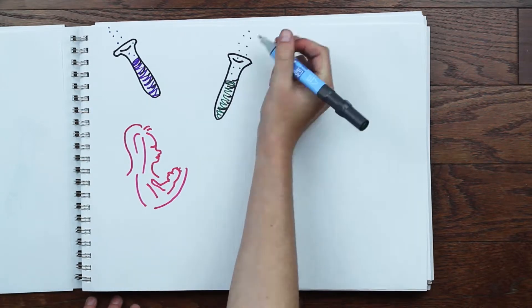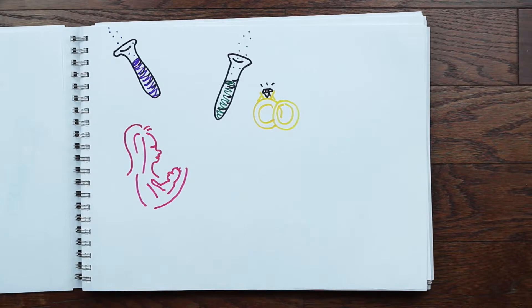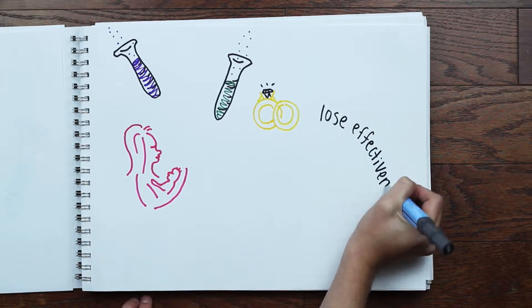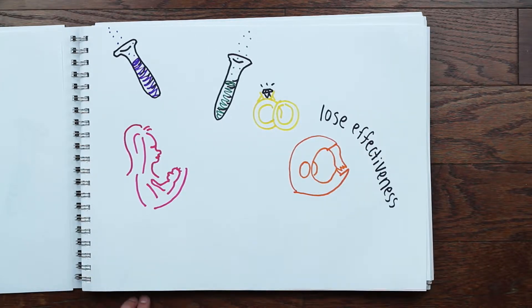Vasopressin bonds men to their sexual partners and to their children, and is often referred to as the monogamy molecule. These also have two important characteristics. One, they lose their effectiveness over multiple partners, like a piece of tape that loses its stickiness when reused.